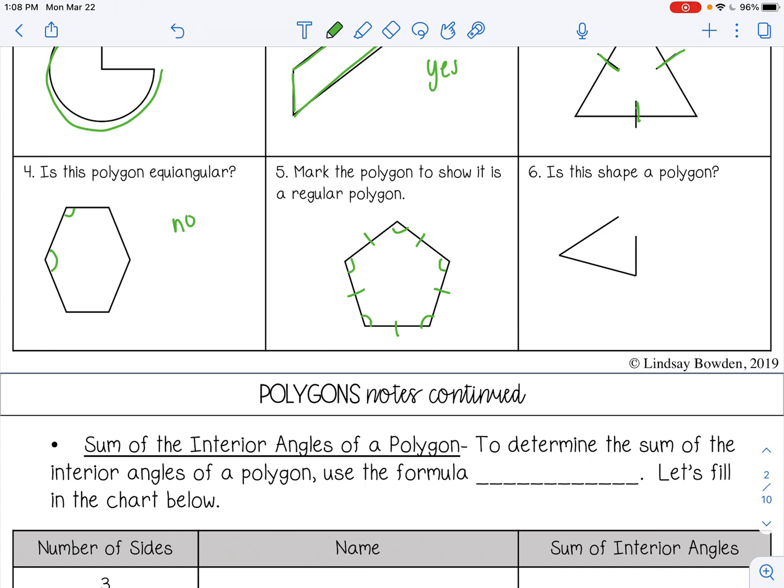And then number six, is this shape a polygon? That would be no because it's not closed. It's open here. So that's not a polygon. Alright, let's continue on.